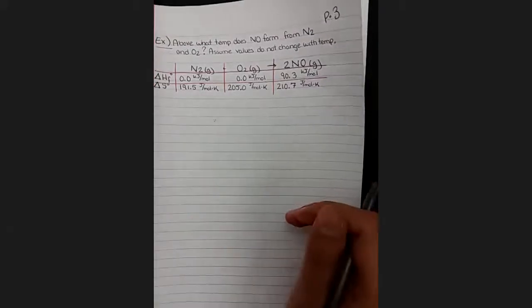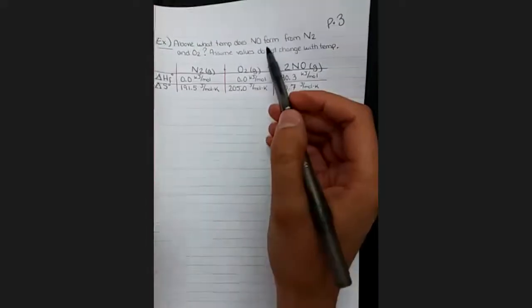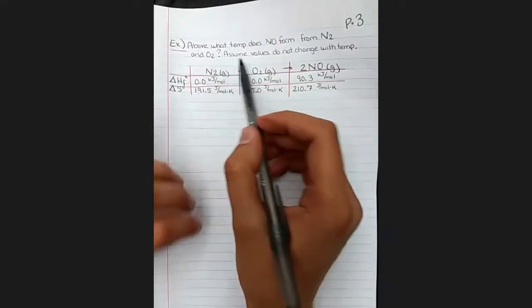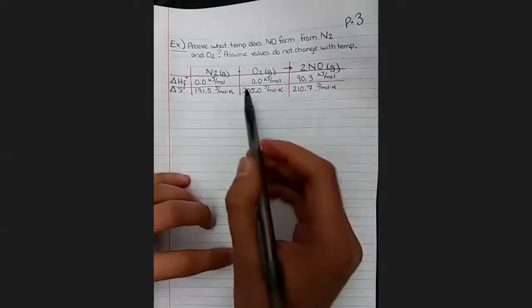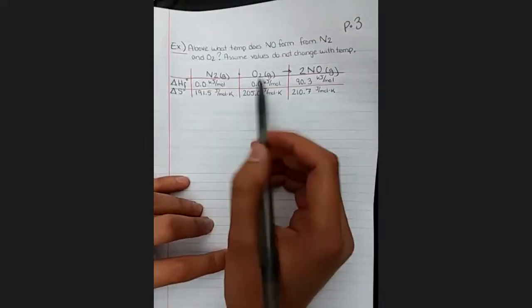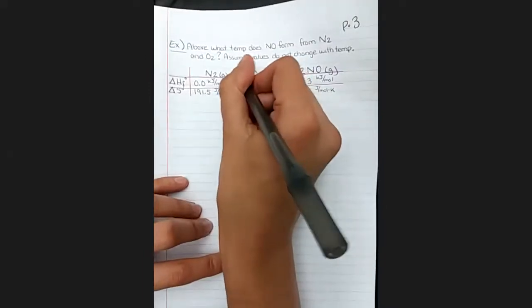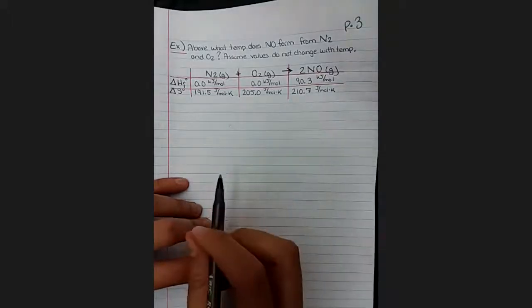So here is our example problem. Above what temperature does nitrogen monoxide form from dinitrogen and dioxygen? Assuming that the values that we use do not change with temperature. So here's the reaction of interest: Nitrogen gas plus oxygen gas goes to nitrogen monoxide gas.